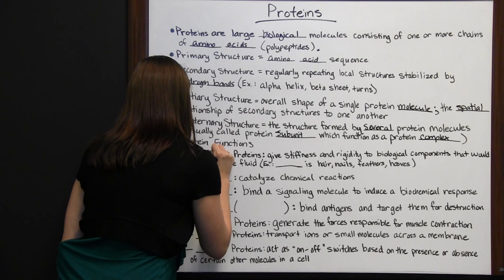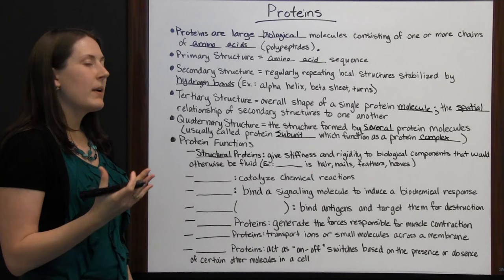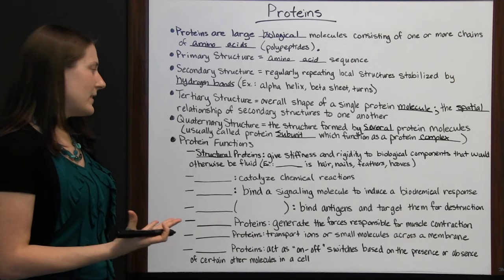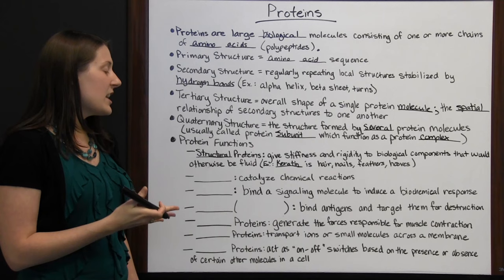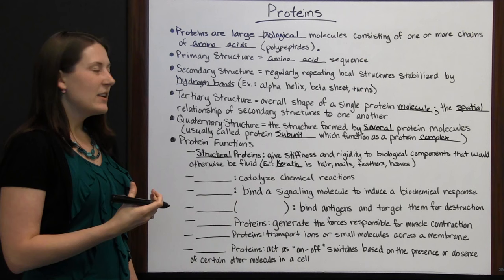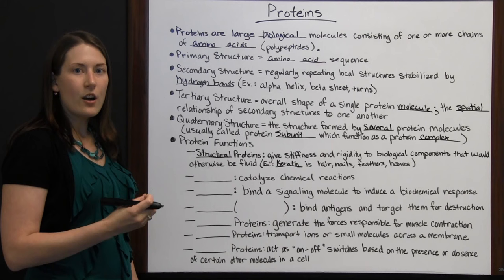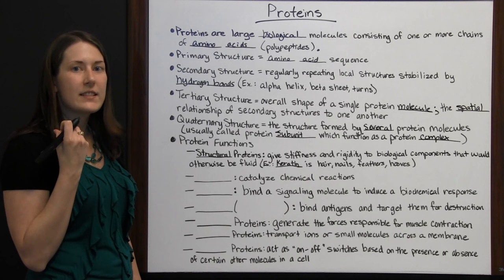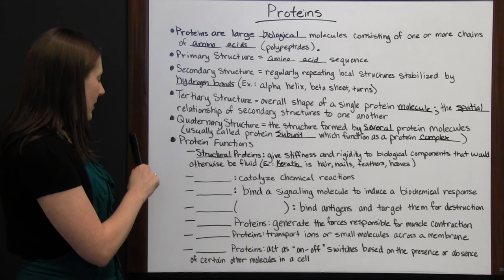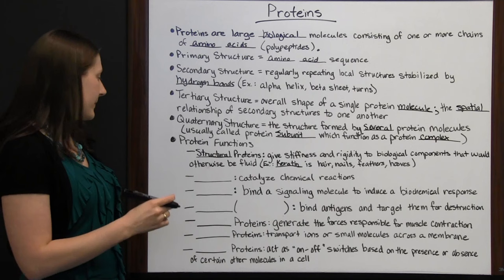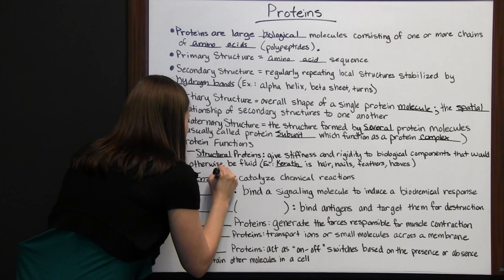Structural proteins give stiffness and rigidity to biological components. An example is keratin, found in hair, nails, birds' feathers, and animals' hooves — it gives them a hardness they wouldn't otherwise have. Your nails and hair feel harder than your skin because of this protein that provides more rigidity.